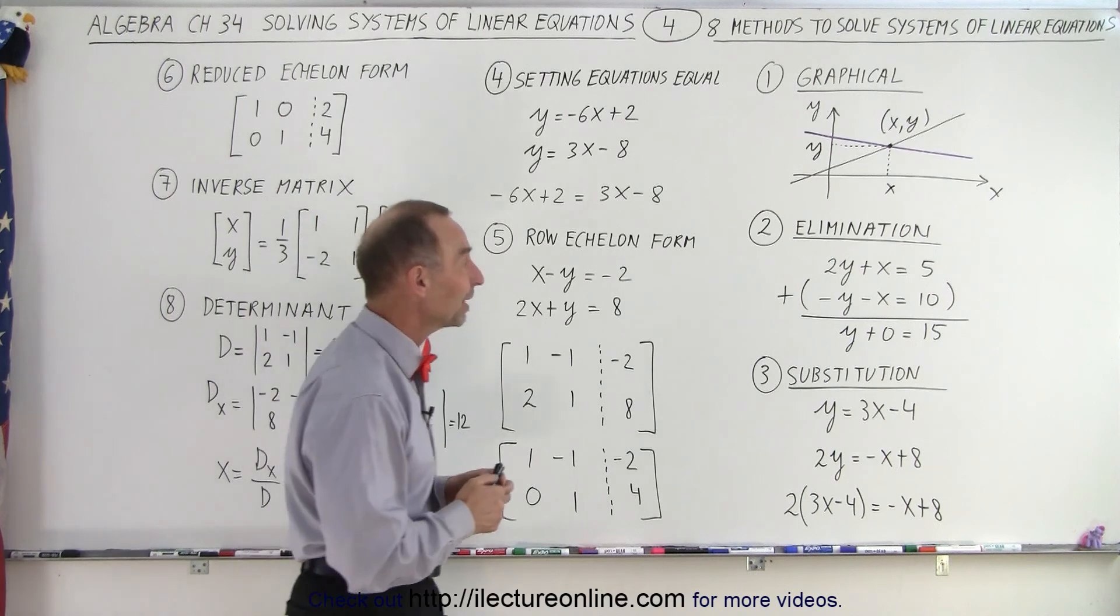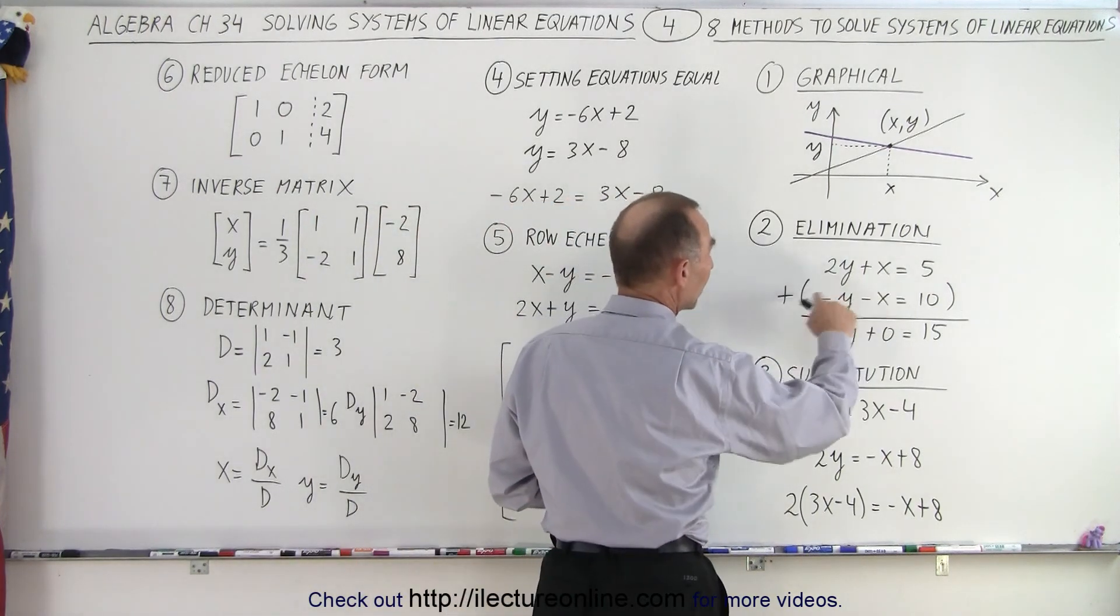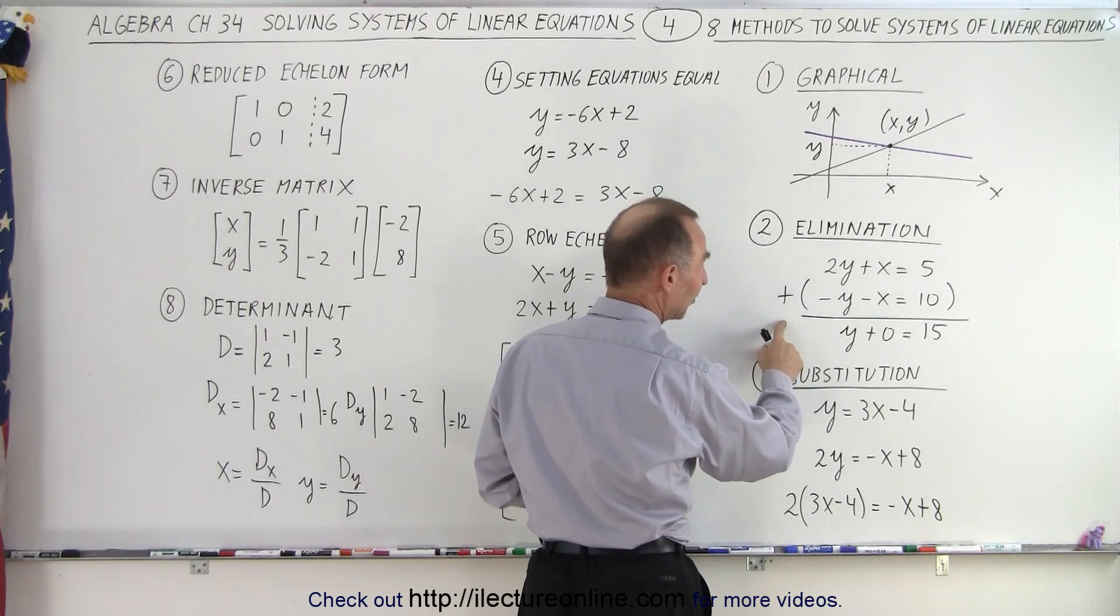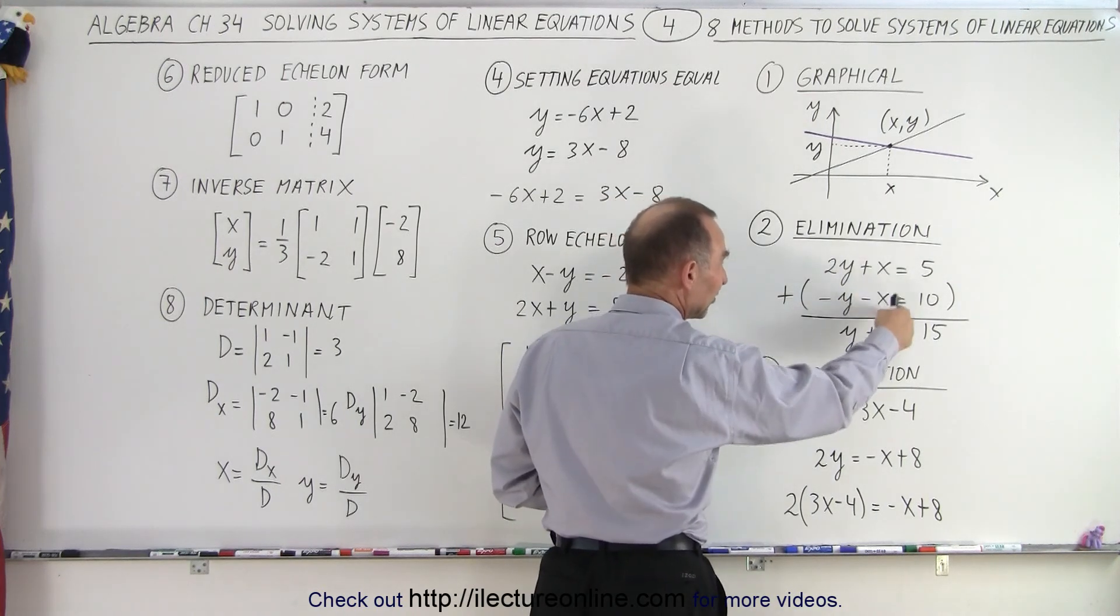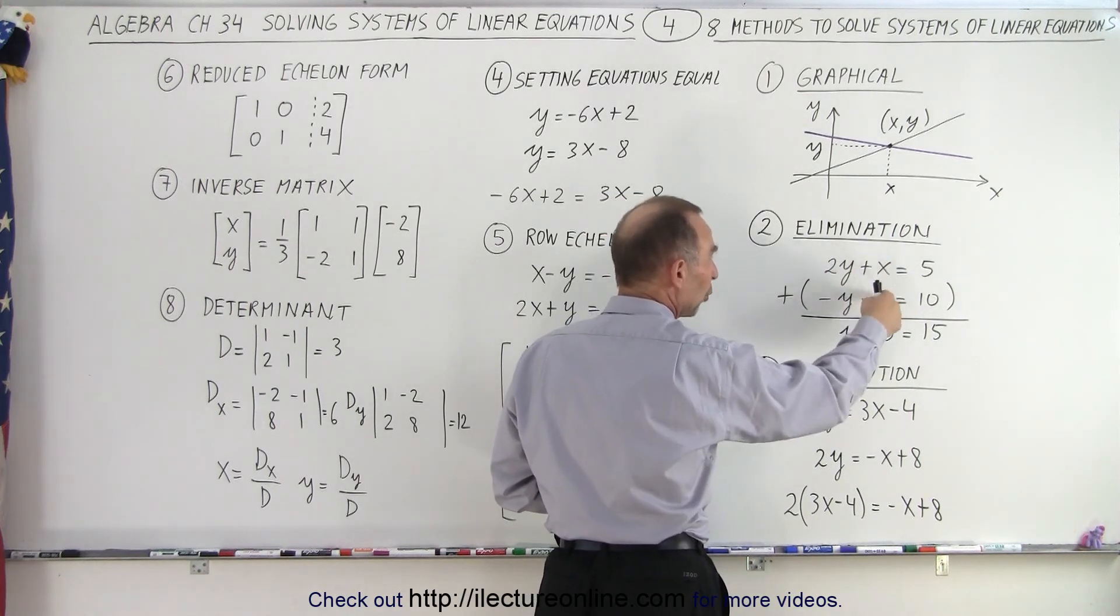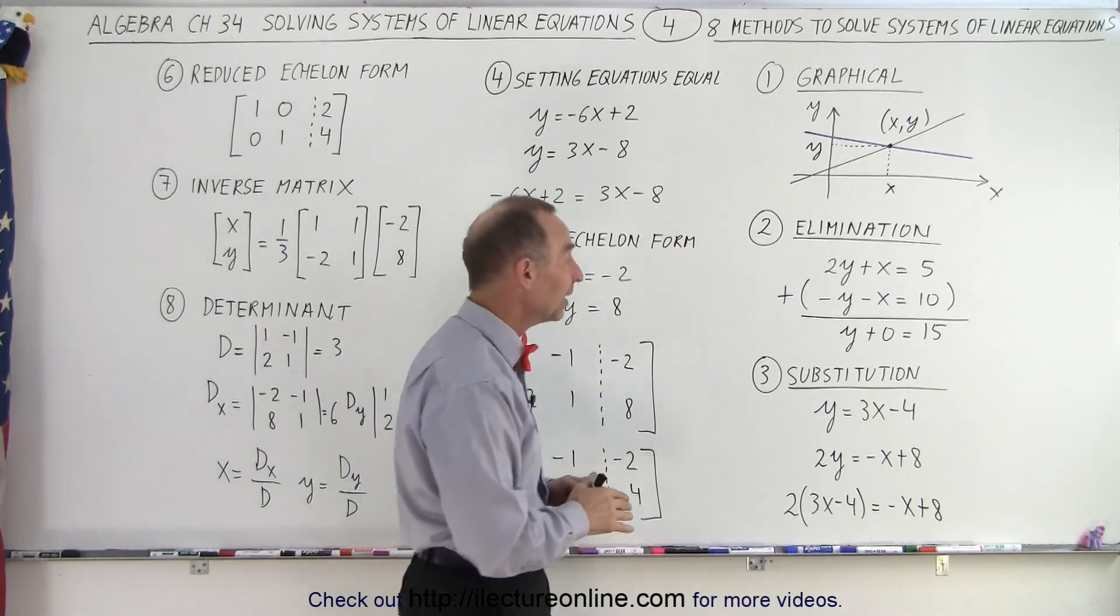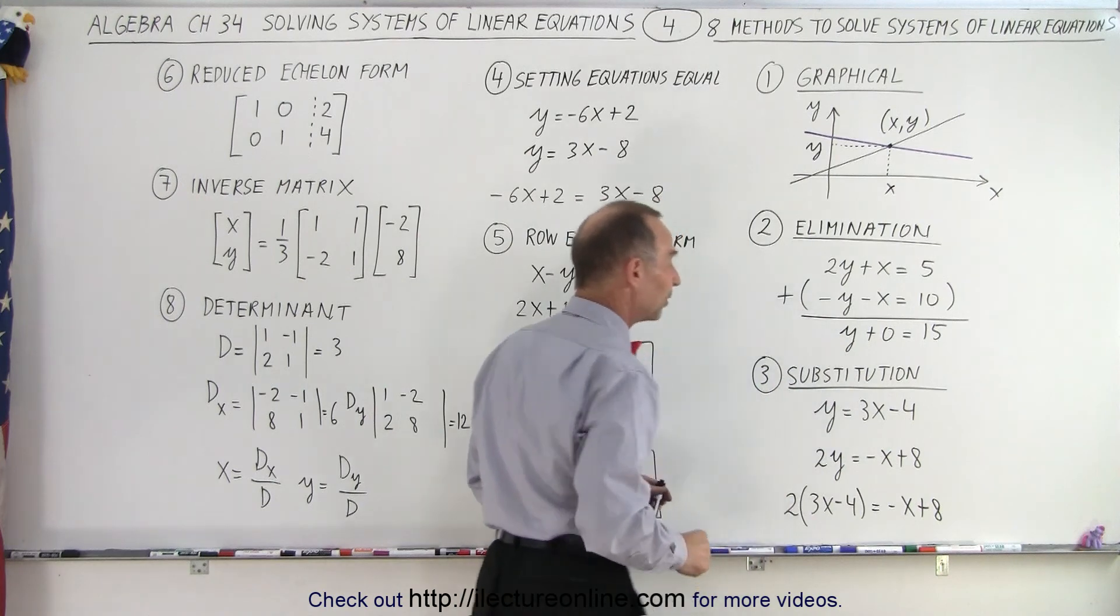Or we can use the method of elimination. We have the two equations. We can either add or subtract the two equations together. In this case, if we add them, we can see that the x's will drop out or they are eliminated. And so once you have one of the variables eliminated, it's then easy to solve for the other variable.